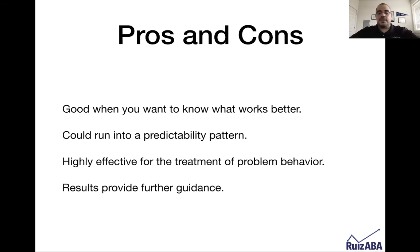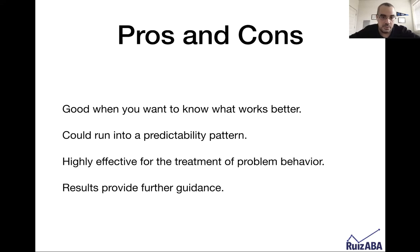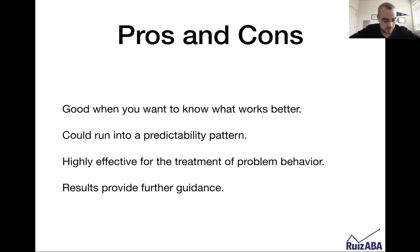The benefits of these designs: the alternating treatment is good when you want to know what works better, and in functional analysis it's good to know the function of the behavior. You have to be careful to control for a predictability pattern — you don't want the person to know what condition is going to be used on any given day, because then they'll behave accordingly. The multi-element design specific to FA is the gold standard for treatment of problem behavior, and those results provide further guidance for those seeking to treat problem behavior when they don't know what's maintaining it.